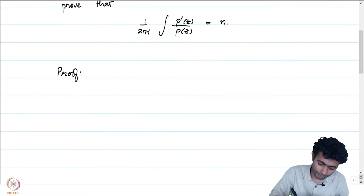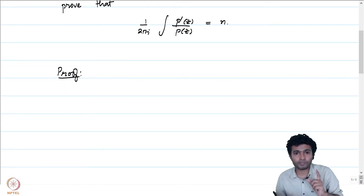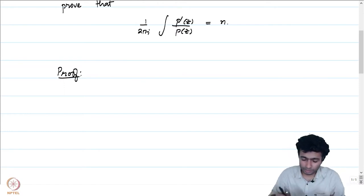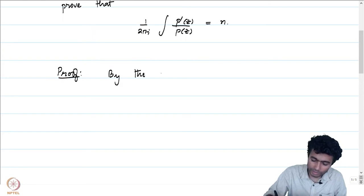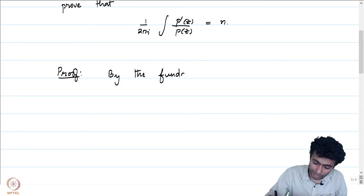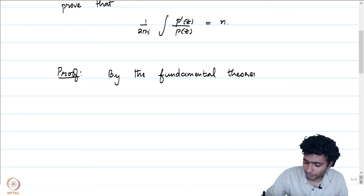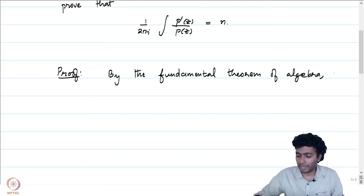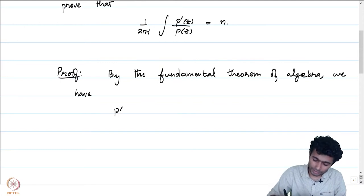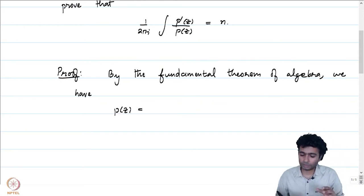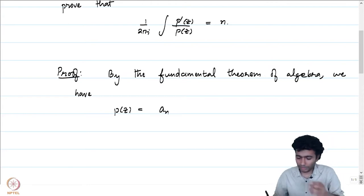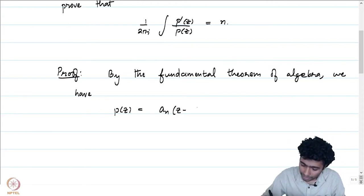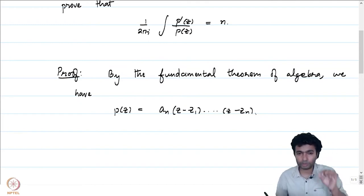We have to show that this integral is equal to n. Let us give a proof. By the fundamental theorem of algebra, which we have proved in one of the earlier weeks, we have p(z) equal to some constant a_n — that is the leading coefficient — times (z − z₁) up to (z − z_n). Our polynomial has degree n.